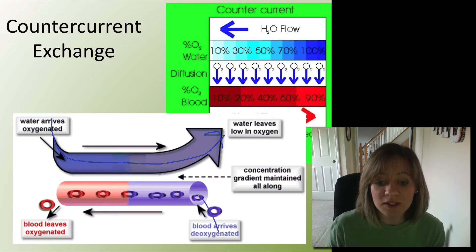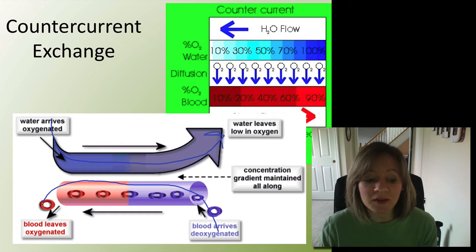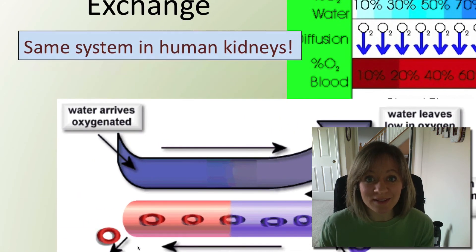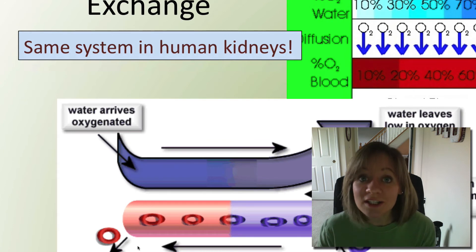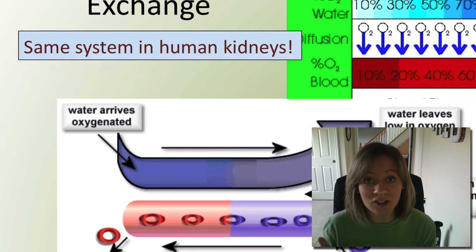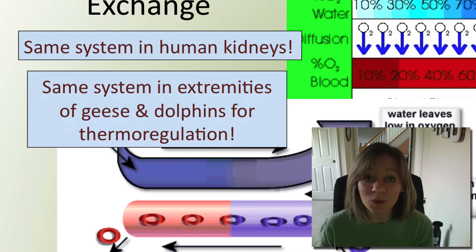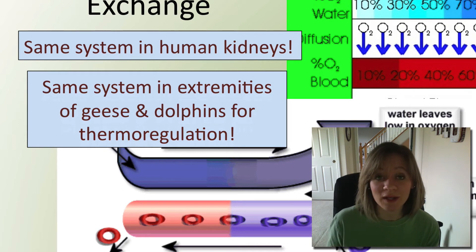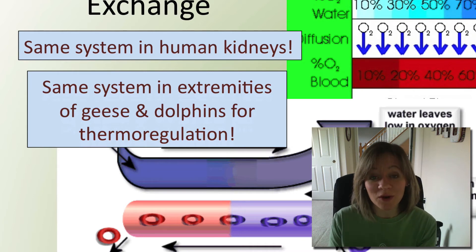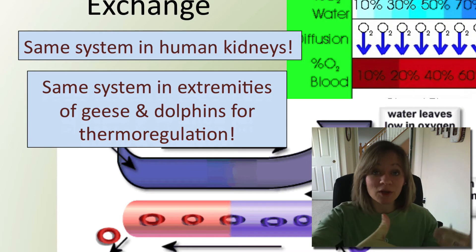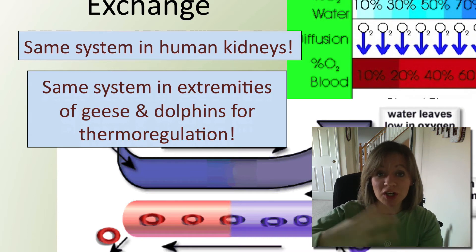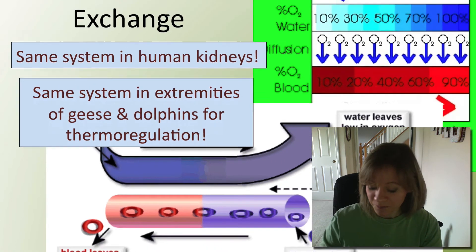The blood picks up the oxygen and then leaves. Interestingly, this is the exact same system — this counter-current exchange — that your kidneys use to regulate water and salt balance in your nephrons. And it's the same system that geese use in their legs and dolphins use in their fins in order to keep warm, because their fins and legs are further away from their warm body core. They use this counter-current exchange — one system flowing in the opposite direction to exchange heat or exchange water. Very interesting.